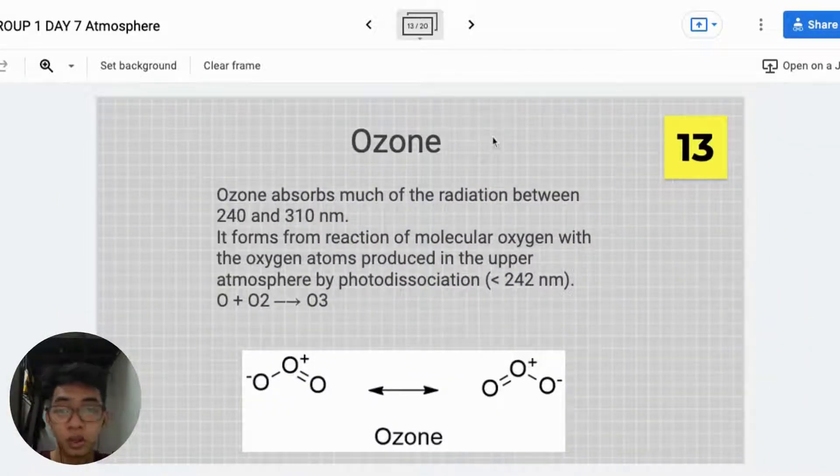Ozone. Ozone absorbs much of the radiation between 240K and 310 nm. It forms from reaction of molecular oxygen with oxygen atoms produced in the upper atmosphere by photodissociation.